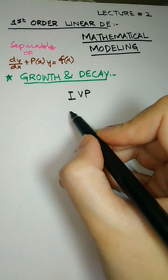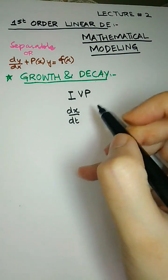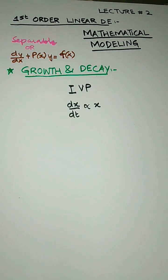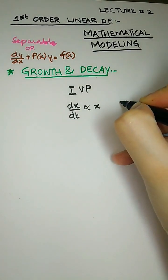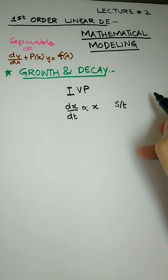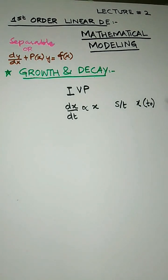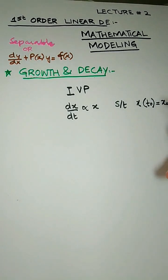The IVP is: dx/dt is directly proportional to x — that is, how much quantity or amount is growing or decreasing with time. It contains the initial condition: x(t₀) = x₀, where t₀ is the initial time and x₀ is the amount initially present. This is the linear model for first order differential equations.